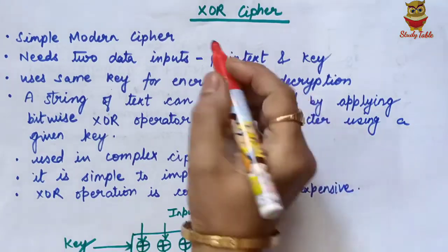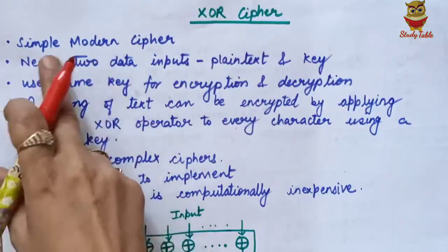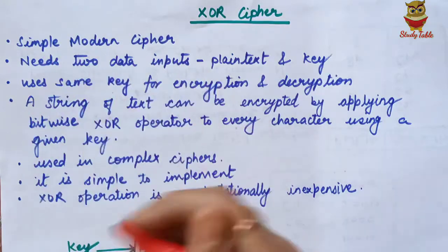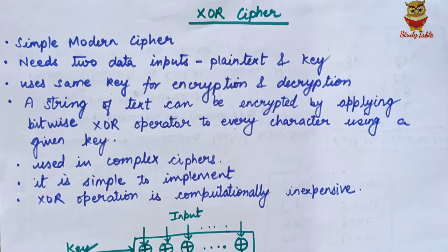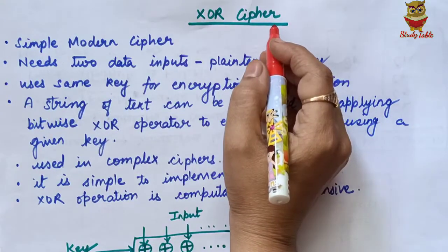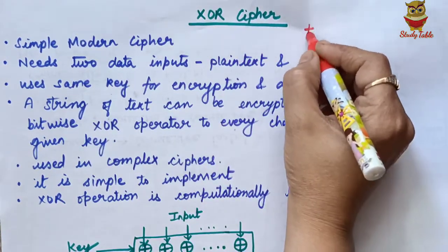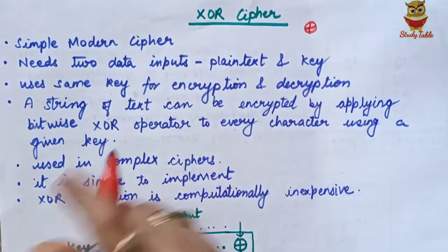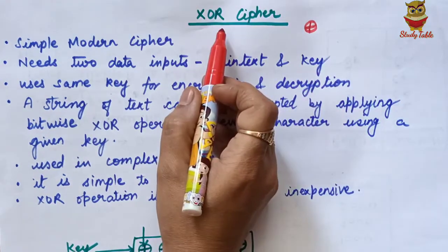In this video, we will study XOR cipher, which is a simple modern cipher. As many modern ciphers, they are made by simple modern ciphers — these are simple predefined functions. This is why we call it XOR cipher, because it uses the exclusive OR operation.